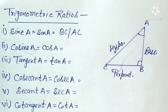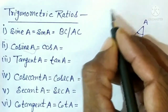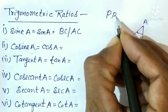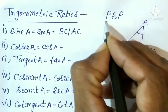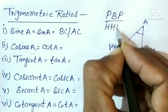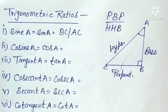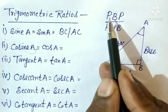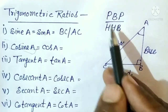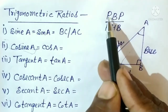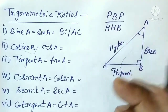This is a trick: sin A equals perpendicular upon hypotenuse. The trick to remember is P, B — P upon H, H, B — where P stands for perpendicular, B stands for base, and H stands for hypotenuse. Remember this trick and you will never forget any of the trigonometric ratios.